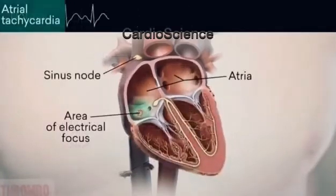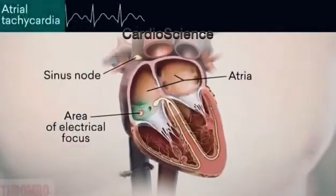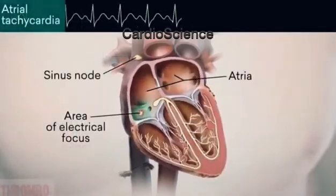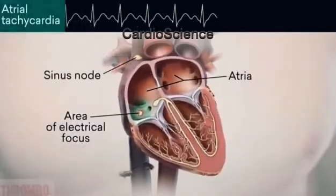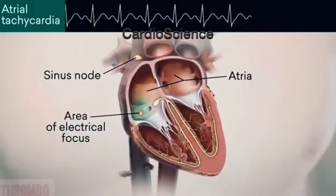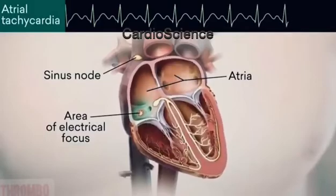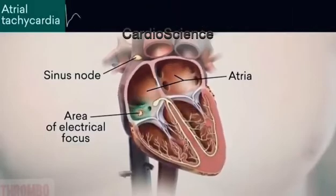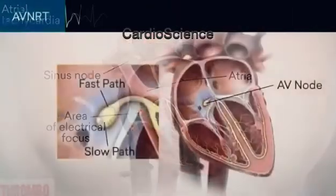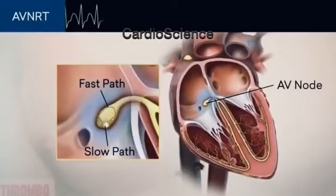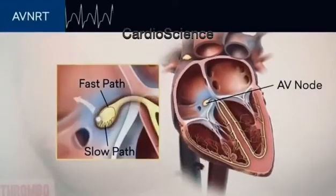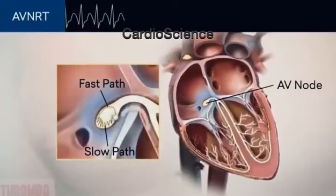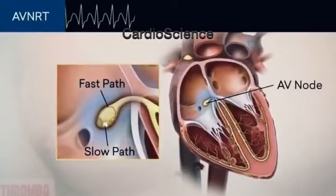In atrial tachycardia, an area of electrical focus controls the heart rate instead of the sinus node, causing the heart to beat rapidly.